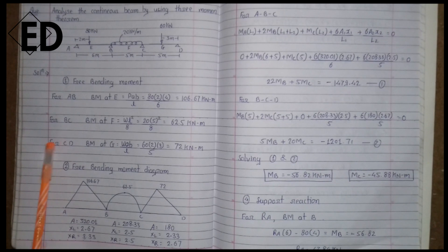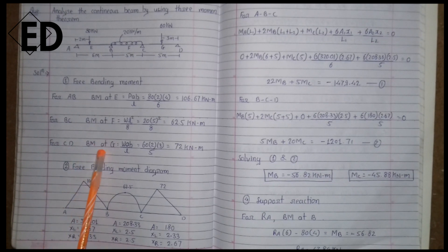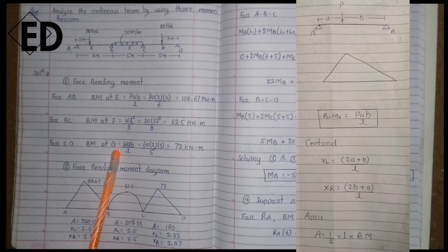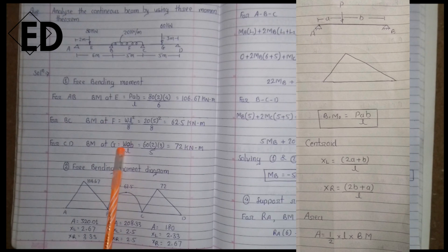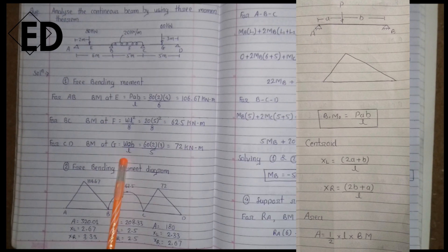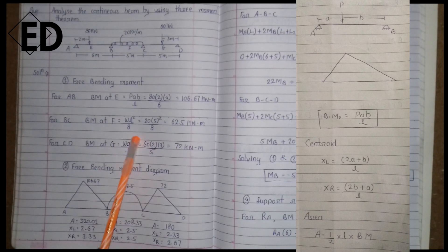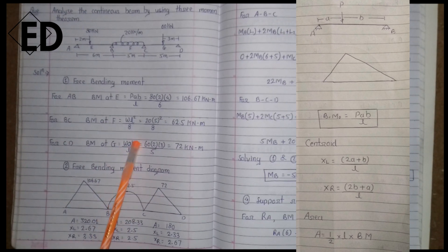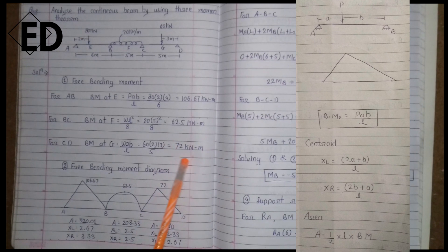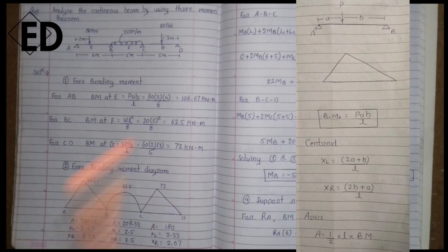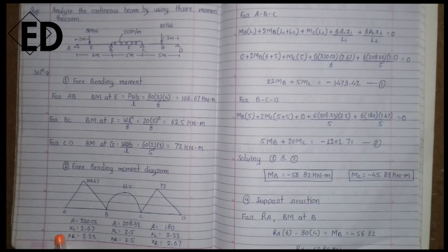For span CD, the bending moment at G — there is a point load, so we use P·a·b/L. Putting in all values, we get 72 kN·m.